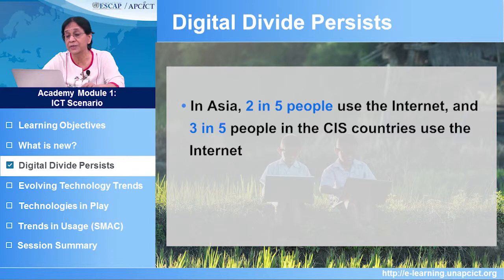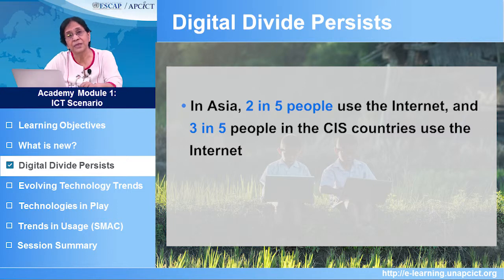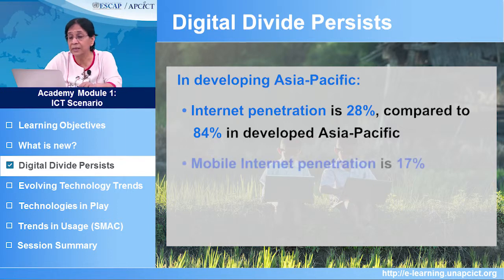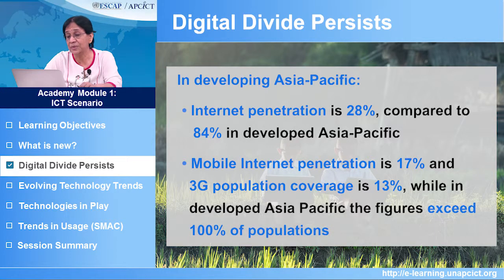In Asia, 2 out of 5 people use the internet, and 3 out of 5 people in the CIS countries — the Commonwealth of Independent States, comprising largely Central Asia and countries such as Azerbaijan and Armenia that were previously part of the old Soviet Union — use the internet. In the Asia-Pacific, there are divides with 28% internet users compared to 84% in developed Asia-Pacific. Mobile internet penetration is 17% and 3G population coverage is 13%, while in developed Asia-Pacific the figures exceed 100% of the population.